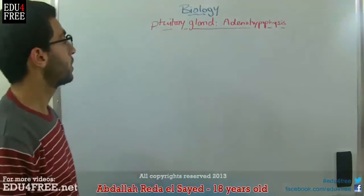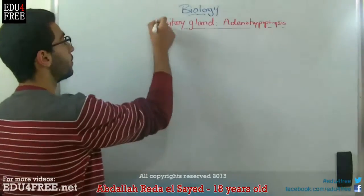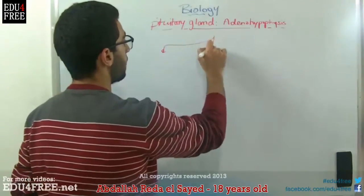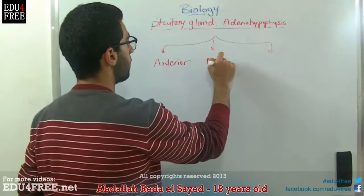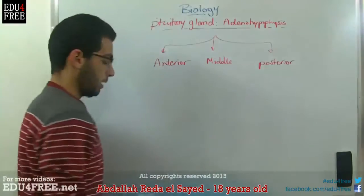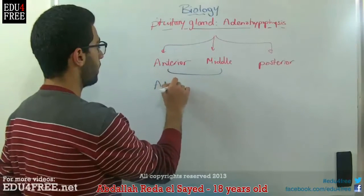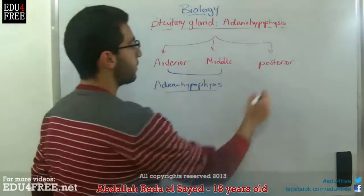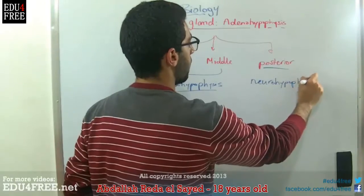We are still with Chapter 6 in Biology, which talks about hormones. Today we will talk about the pituitary gland, and the pituitary gland has three lobes. We have an anterior lobe, a middle lobe, and a posterior lobe. Both anterior and middle lobes together are called the adenohypophysis, and the posterior one is called the neurohypophysis.